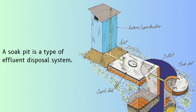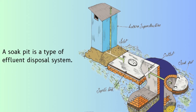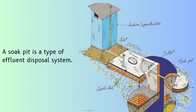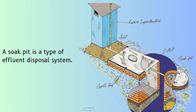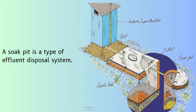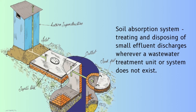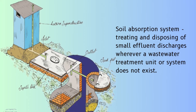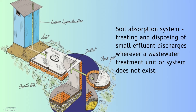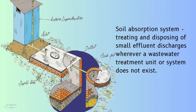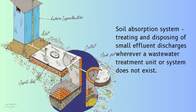A soak pit is a type of effluent disposal system used to treat and dispose of the effluent coming out of a pretreatment system safely to the ground. It is a type of soil absorption system, a smaller version of leach fields, and is suitable for treating and disposing of small effluent discharges wherever a wastewater treatment unit or system does not exist.